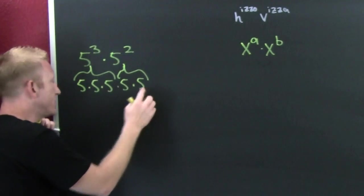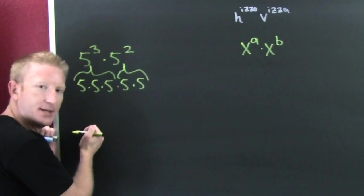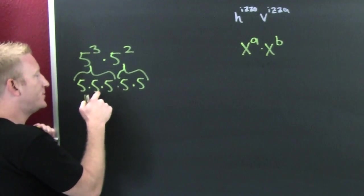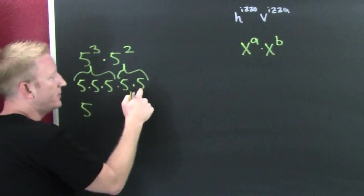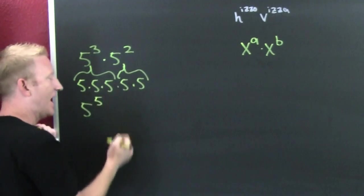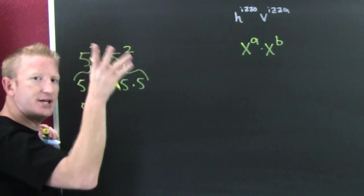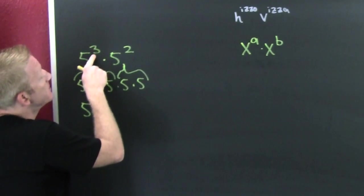We can rewrite that since this is all multiplication. We have a compact notation called exponentiation - this is five to the one, two, three, four, five, or five to the fifth power. So wait, let's generalize this. Three plus two is five, very nice.